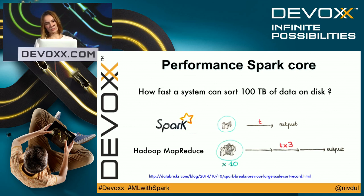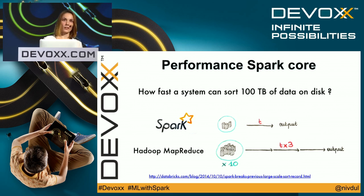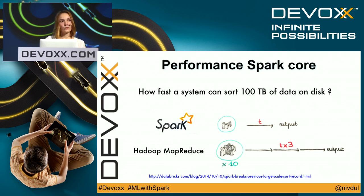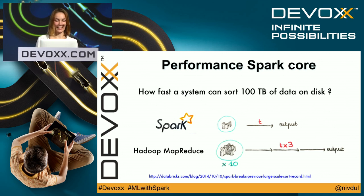Now I'd like to talk about performance. It's clear that Spark is more efficient than Hadoop MapReduce for in-memory data processing. But sometimes you can't use in-memory processing and must use disk. The question is: how fast can a system sort 100 terabytes of data on disk? In a comparison between Hadoop MapReduce and Spark, Hadoop MapReduce with ten more machines needed three times longer than Spark. So even for disk processing, Spark is still faster than Hadoop.